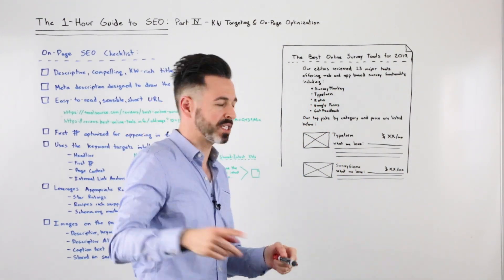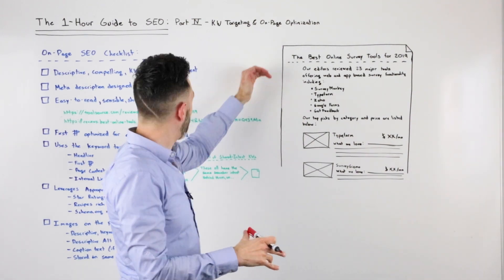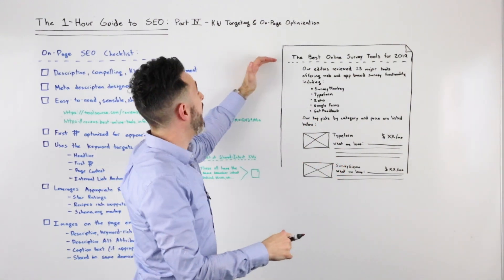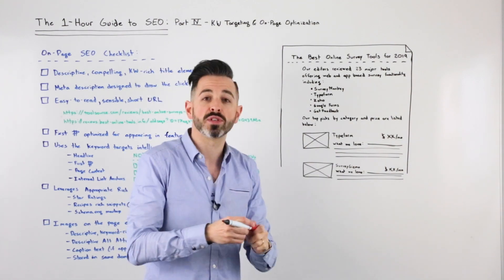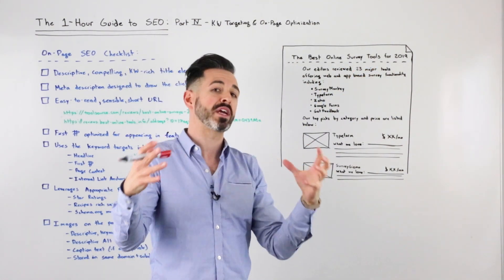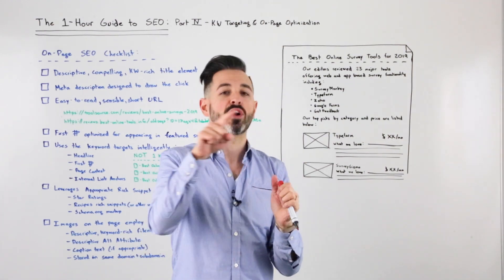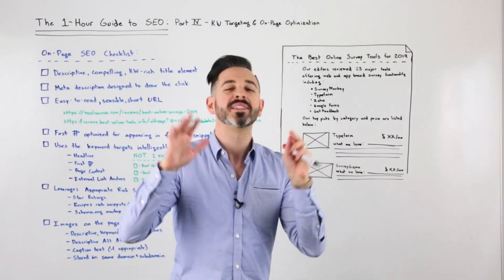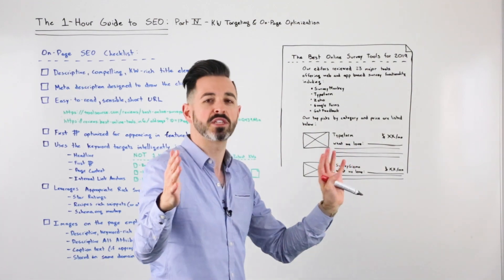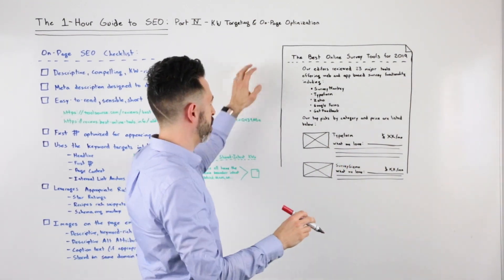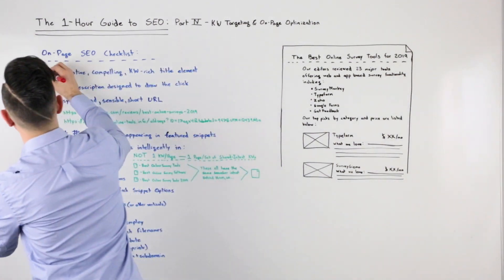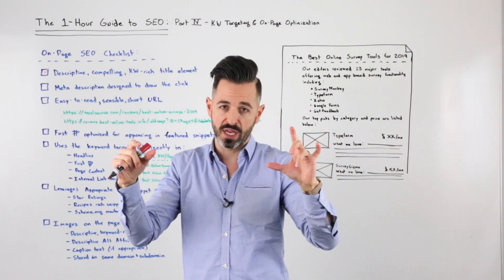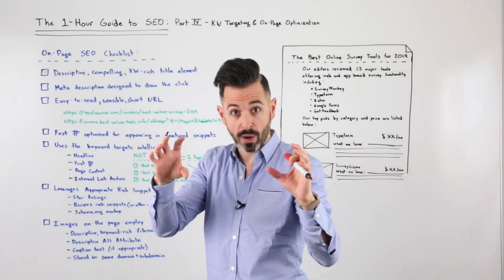The title element is also called a page title or title tag. For example, if I'm a tool website like toolsource.com and I want to rank for 'best online survey tools,' then 'Best Online Survey Tools for 2019' is a great title tag. That's very different from stuffing it like: 'best online survey tools, best online survey software, best online survey software 2019, best survey software.' That is no longer good SEO practice. You want it descriptive and compelling — remember this title also shows up in the search results as the snippet title for your website.